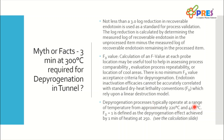The depyrogenation process typically operates over a temperature range of approximately 220°C to 400°C. FD1 is defined as the depyrogenation effect achieved by a minimum of 1 minute at 250°C. So when your process runs at 250°C for 1 minute, you get FD equal to 1. If we make an equivalency with moist heat: in moist heat, if your process is exposed for 1 minute at 121°C, your F0 value will be 1. For depyrogenation, we use 250°C as the reference temperature and FD instead of F0. We will see in the upcoming slides how changing temperature and time affects the FD value.